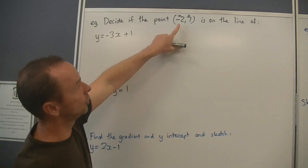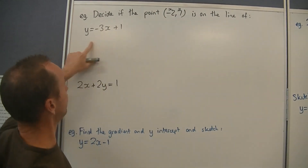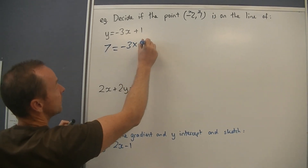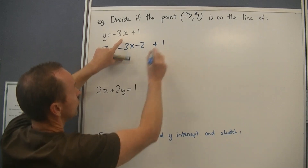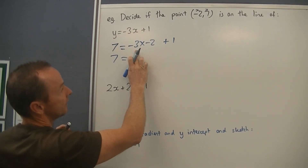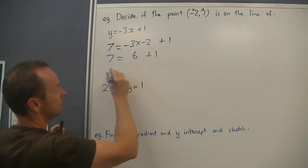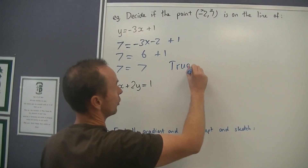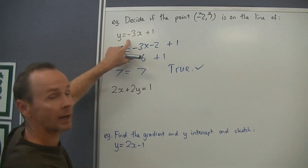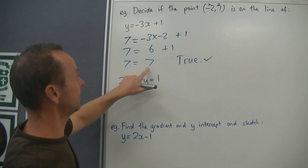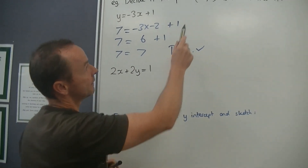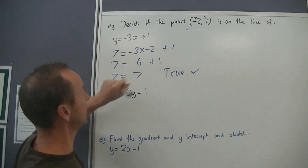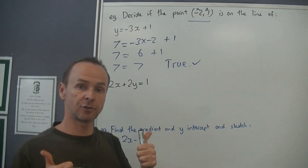What we have to do is substitute each of these values — x equals minus 2 and y equals 7 — into this equation. So we get: 7 equals negative 3 times negative 2, plus 1. So that equals: negative 3 times negative 2 is positive 6, plus 1. So we get 7 is 7. Because both sides of the equation are equal, that means that is true — that point does lie on the graph of that equation. If you got something like 7 equals 5, that's obviously not true, and that would mean the point does not lie on the equation. So you substitute both points into the equation, and if both sides are equal, then that point is on the line.